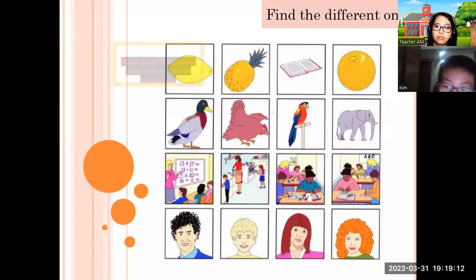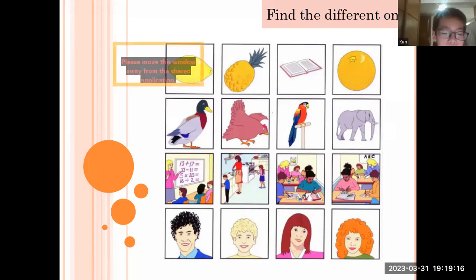The cat says lemon, the pineapple, and book and orange. It is the book is different because lemon, pineapple, orange are a fruit. Very good. Next one.